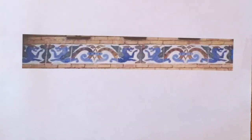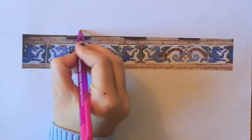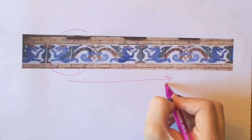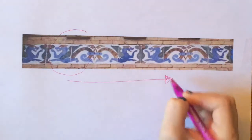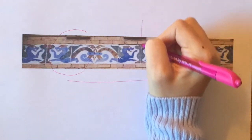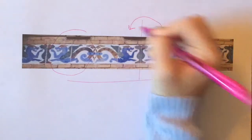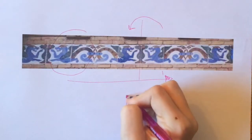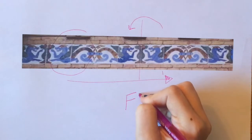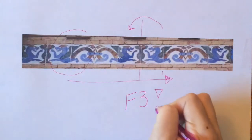Now let's try a more complicated pattern found in a tile frieze from Madrid, Spain. Notice how the dragon is translated along the x-axis, and each dragon is also vertically reflected. This pattern is a combination of translation and vertical reflection, which we classify as an F3 pattern, or slide.